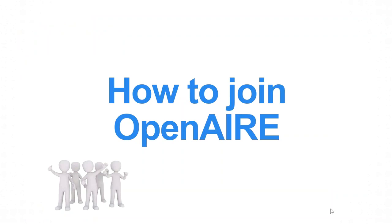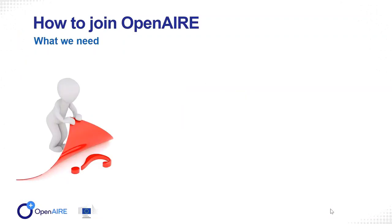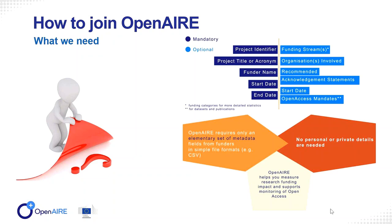Are you a founder wondering how to join Open Air, or are you a NOAD going to provide information to founders about how to join Open Air? The answer is that founders need to provide Open Air with a very limited set of metadata fields from their database. Some of these mandatory metadata fields are the project identifier, project title or acronym, founder name, and start and end date of the projects.